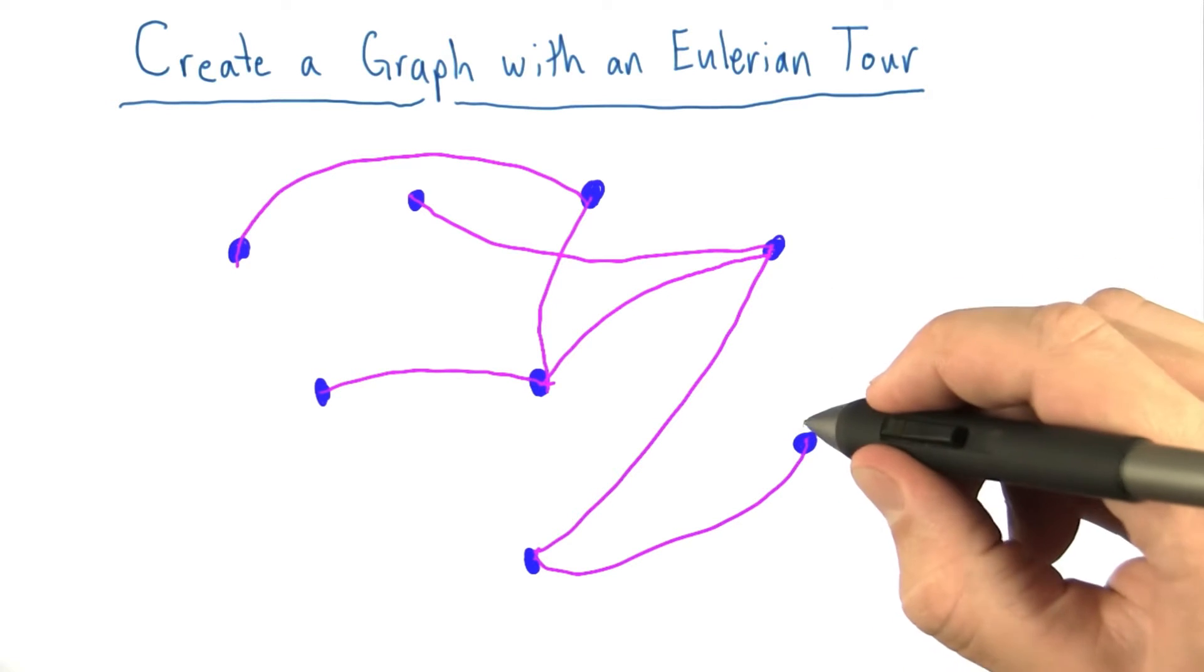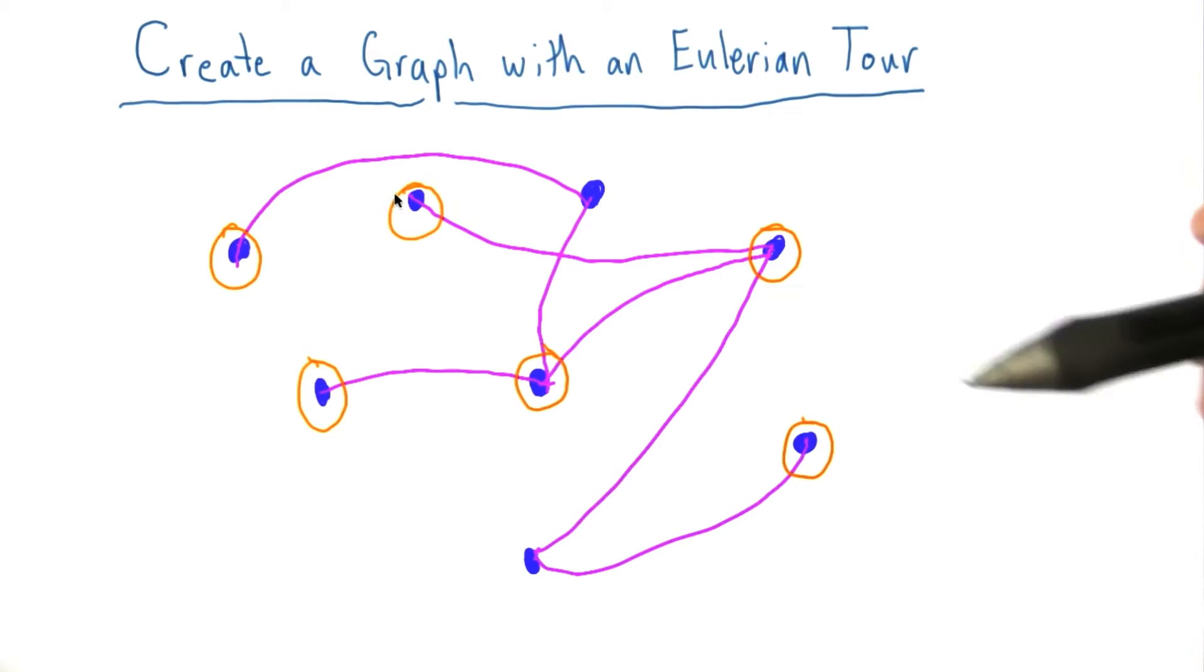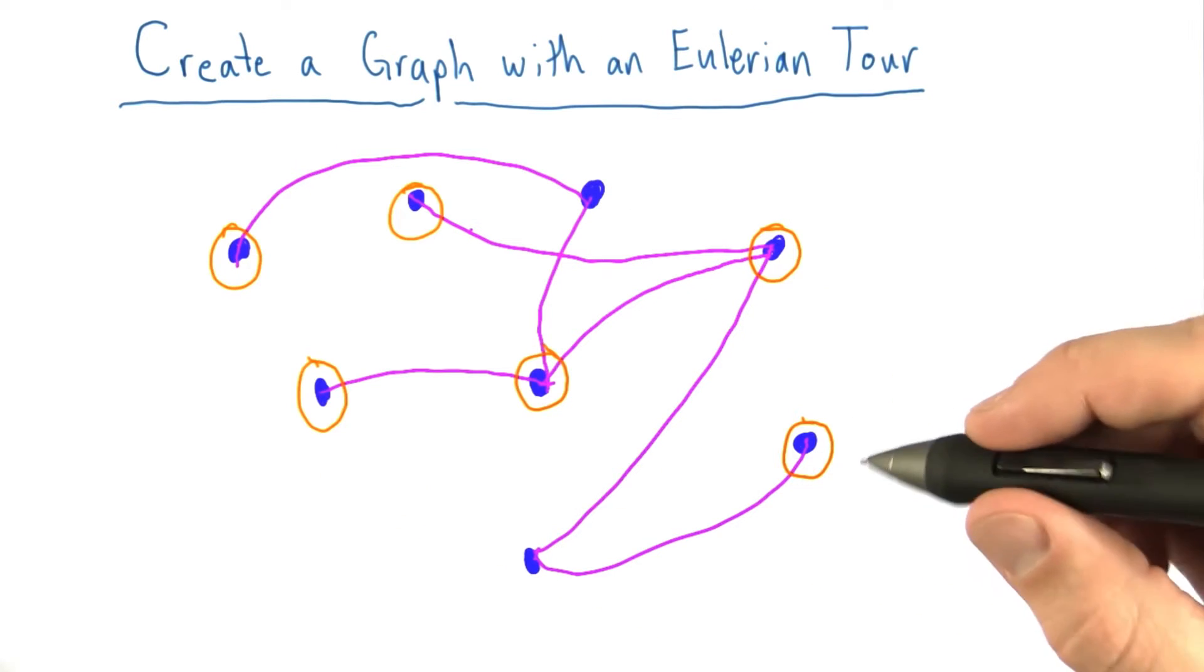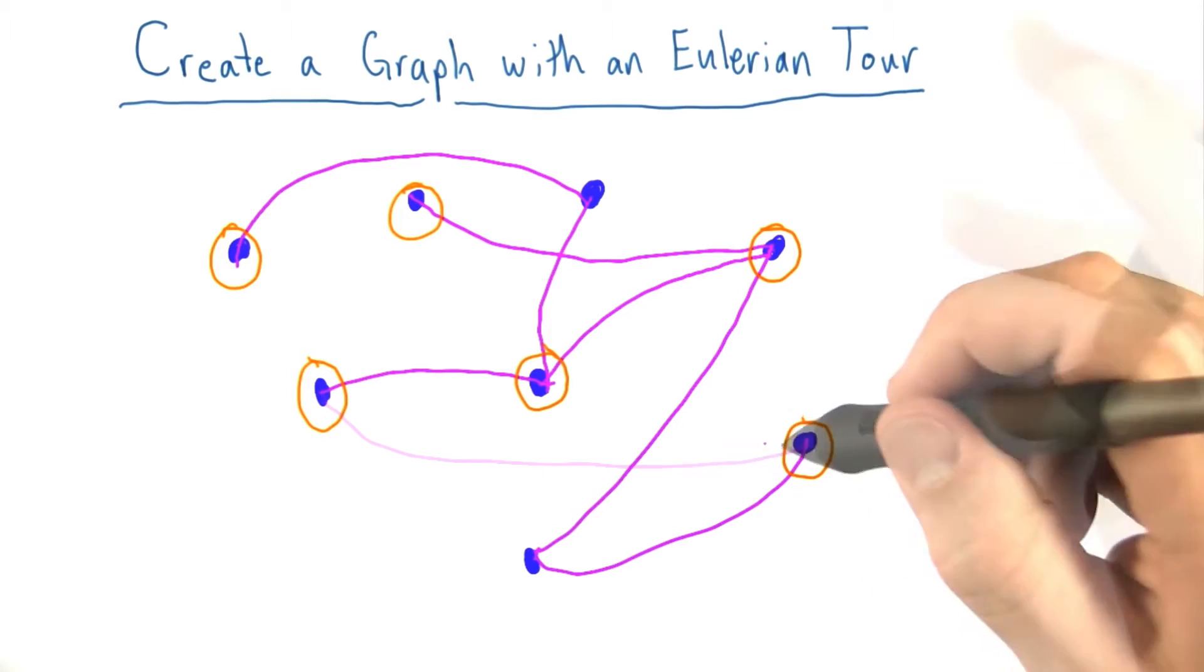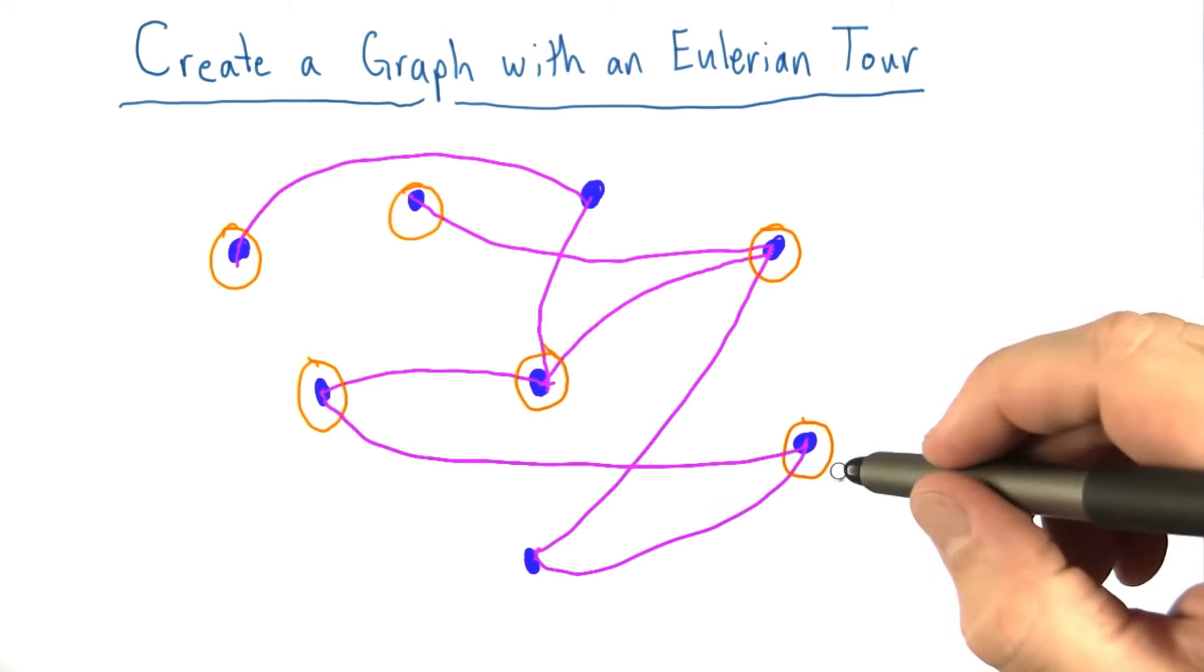Then classify all the nodes as being odd or even. All the nodes in orange have odd degree and the other two nodes are even. We then pick a node in the set of nodes with odd degree, say this one, and then connect it with another node that has odd degree. So we'll connect it to that one. These both now have even degree.